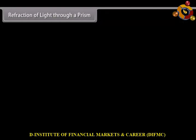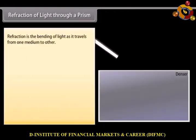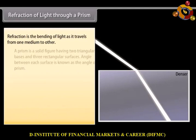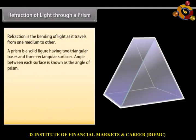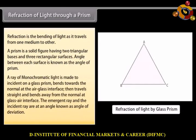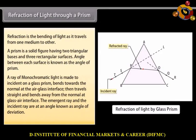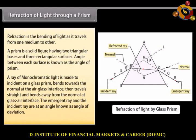Refraction of Light Through a Prism. Refraction is the bending of light as it travels from one medium to another. In this section, we shall discuss the phenomenon of refraction by a glass prism. A prism is a solid figure having two triangular bases and three rectangular surfaces. The angle between each surface is known as the angle of prism. A ray of monochromatic light incident on a glass prism bends towards the normal at the air-glass interface, then travels straight and bends away from the normal at the glass-air interface. The emergent ray and the incident ray are at an angle known as the angle of deviation.